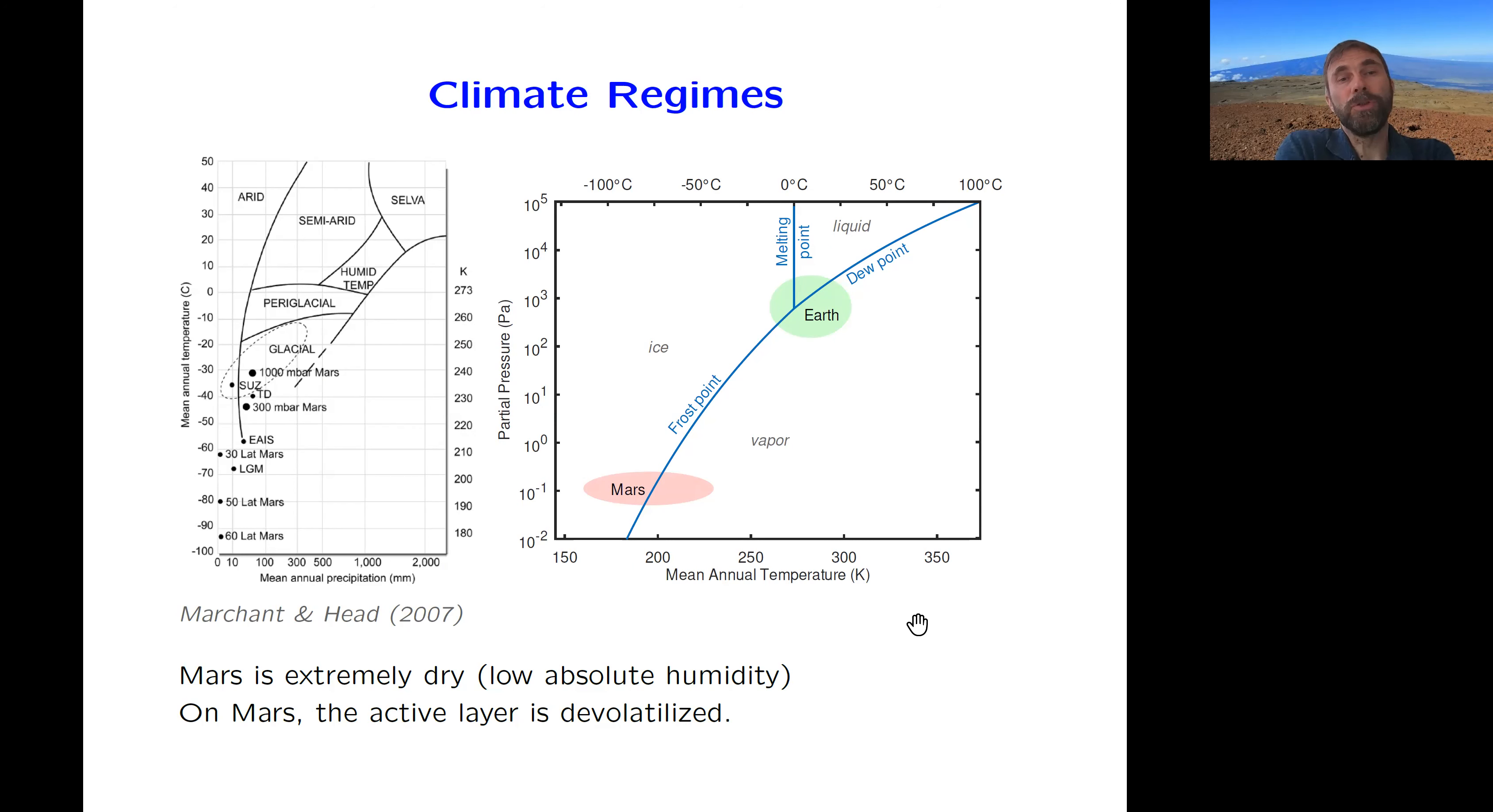Now here are just two diagrams to point out the physical conditions, and these are mean annual mean conditions shown here. So even the interior of Antarctica during a large glacier maximum was more humid than Mars is nowadays. But it's getting in that direction.